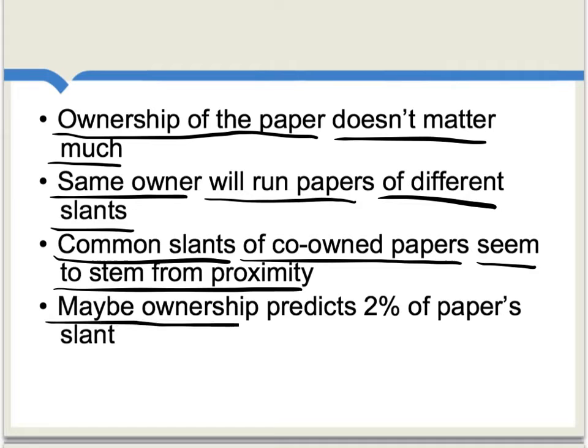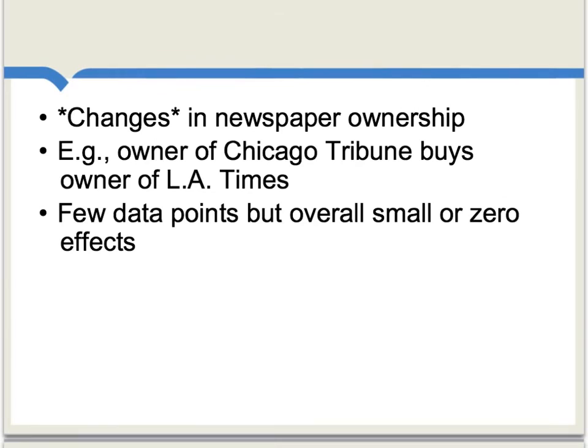Under one specification, ownership — who owns the paper — predicts about 2% of the paper's slant. Of course, that's really not that much. This is further evidence for the possibility that, to the extent we do find some political slant in the news, maybe it's driven by what readers want to hear.